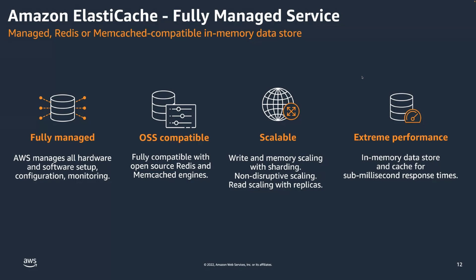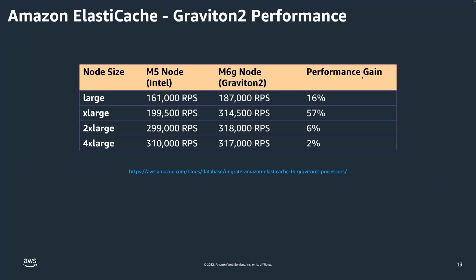ElastiCache is known for being extremely performant. Having that in-memory data store with sub-millisecond or even microsecond access time, combined with the linear scalability of ElastiCache for Redis up to 500 nodes, gives you remarkable performance. We provide both Intel and Graviton2-based instances. When we first released Graviton2 instance types, benchmarks showed up to a 57% performance gain compared to the Intel M5 node. Graviton2 is now the default instance type when creating an ElastiCache cluster, as we believe it offers the best price-performance ratio.